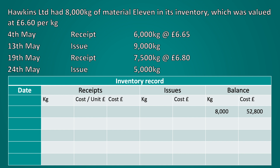Our next line would be the receipt of goods on the 4th of May — 6,000 kilograms at £6.65 per kilogram. We then add the kilograms and the cost to the existing balance at the start of the month to give us our updated balance following the receipt of inventory.